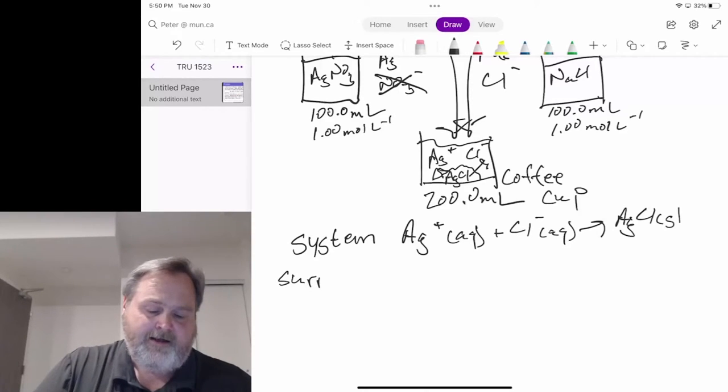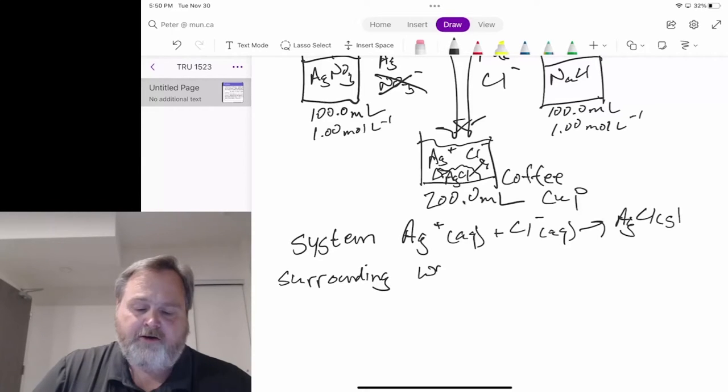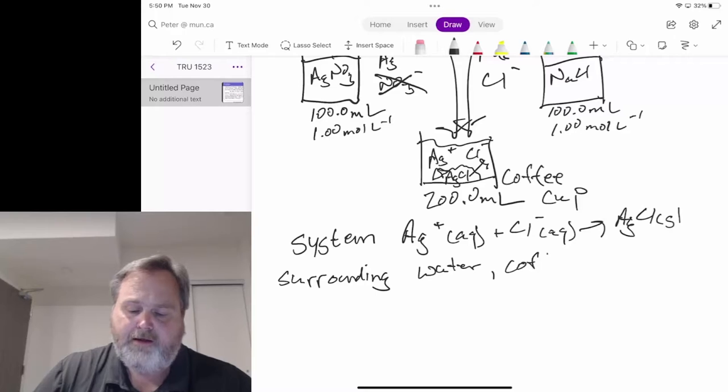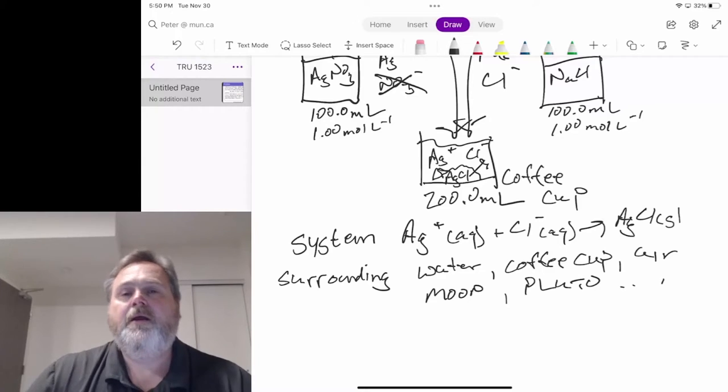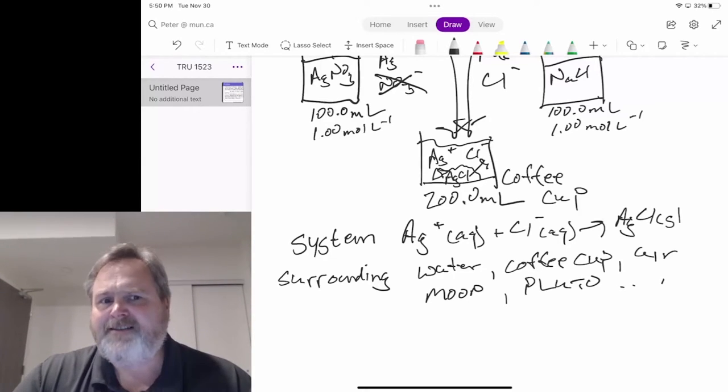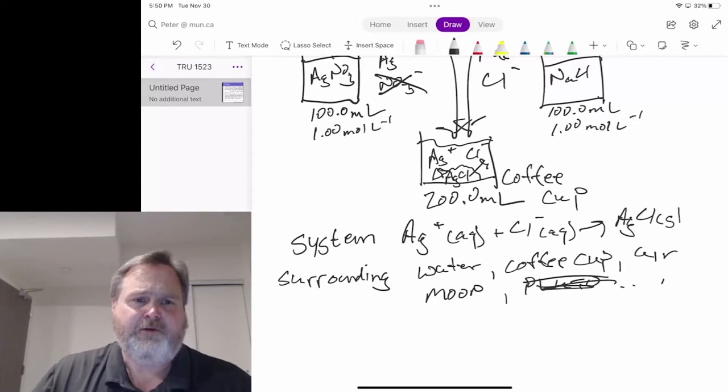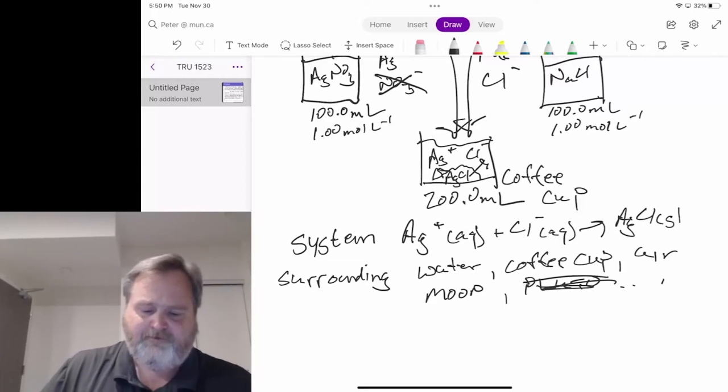The surroundings are going to include things like the water, the coffee cup, the air around everything, the moon, Pluto, and so on. But this is part of calorimetry. We design things so the experiment is done fairly quickly, so we don't have to keep track of all the heat that got all the way up to Pluto.